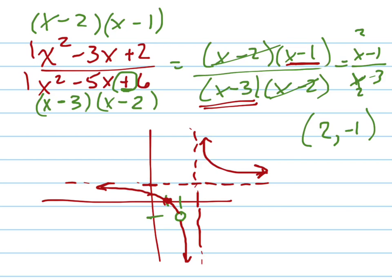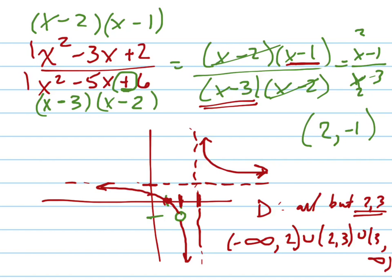So you can see the domain are all the x values that you're allowed to have. And the domain is everything but. Domain is all but negative 2. I'm sorry. Positive 2 and positive 3. So we have to write that in interval notation. That would be from negative infinity to 2 union from 2 to 3 union from 3 to infinity. Like that.